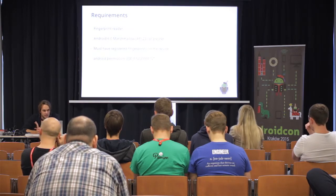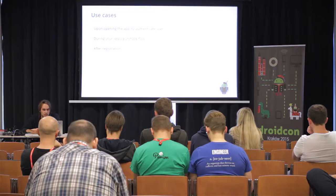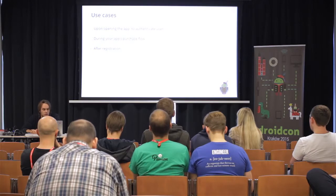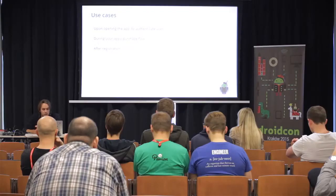What are the use cases for this new API? We can use the Fingerprint API to authenticate users when they open the application. We can use this API to validate and sign purchases — so if a user is buying something, instead of typing a password, they can just put their finger on the sensor. After registration, we can ask the user to provide their fingerprint. Fingerprints are not stored elsewhere; they are stored in the Android KeyStore.